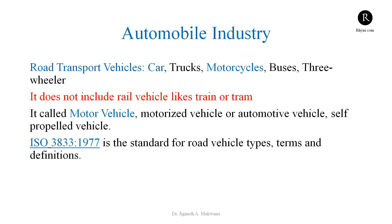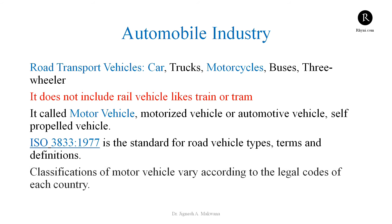ISO 3833-1977 is the standard for road vehicle types, terms, and definitions — anyone interested can refer to this standard. Classification of motor vehicles varies according to the legal code of each country, because each country has several norms and structures regarding which type of vehicle is prominent in that particular region. But we can use a generalized classification of different vehicles.